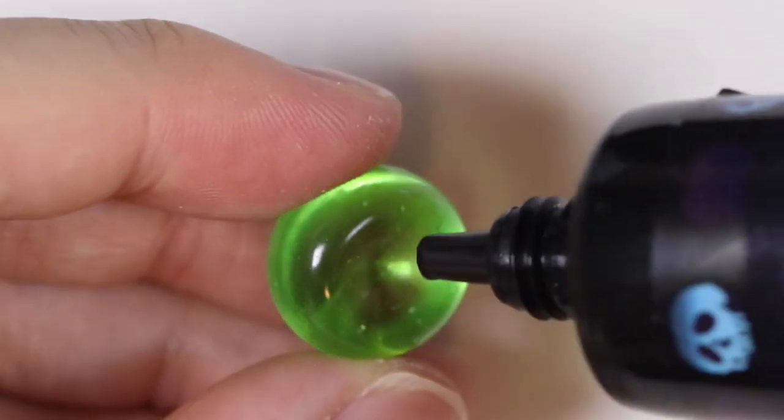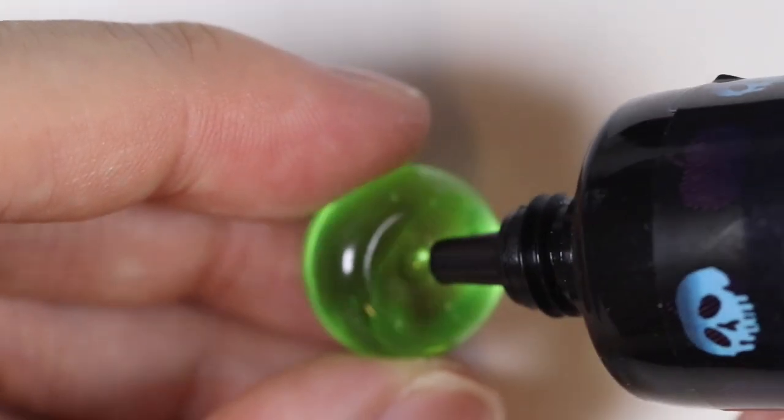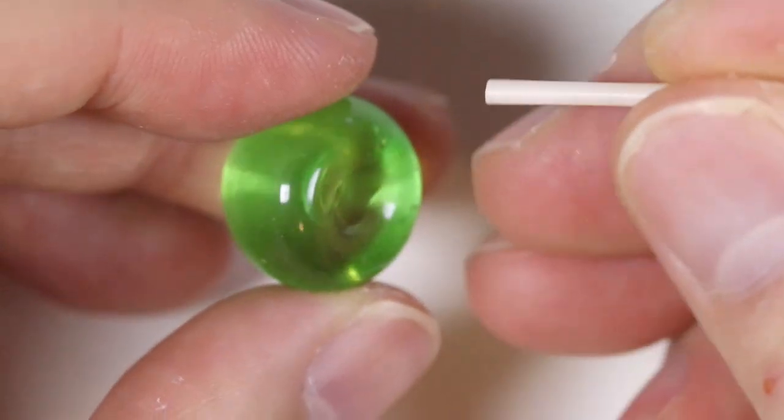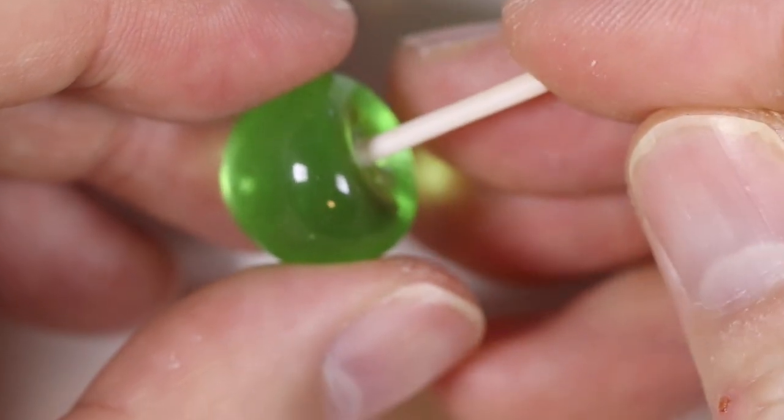Then once the stick is baked and everything is baked, we're going to cut the stick into a little smaller piece, just so it looks better on the apple. So I'm going to take some UV resin and place it on my apple and place the stick right in there and let that cure.